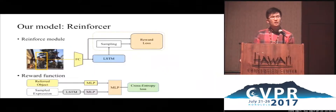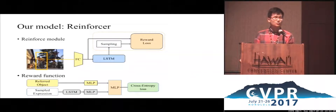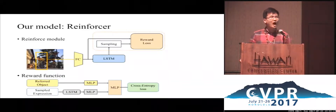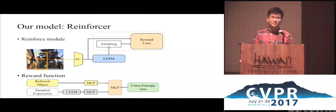Our third module, the reinforcer, is applied on top of the speaker. It serves as another supervision but in a non-differentiable way. During training, we sample the whole sentence from the speaker and feed that into the reinforcer to get the reward. Then we apply policy gradient to update the speaker's parameters based on the reward value. The key here is how we define the reward function. We learn a matching function for any given pair of object and sentence, which measures how likely the sampled sentence is describing the referred object.